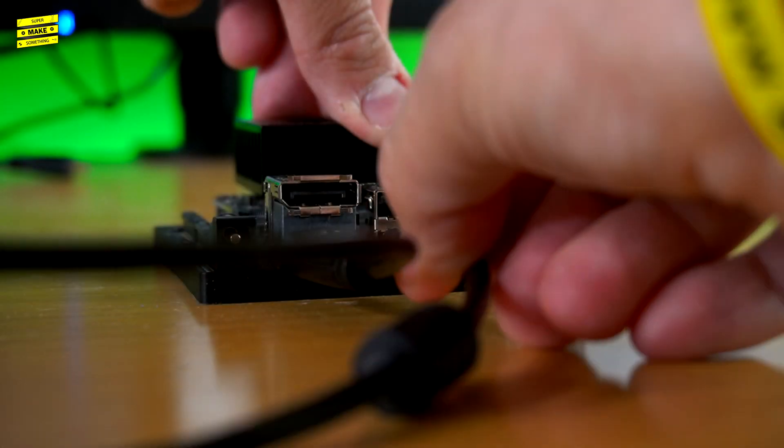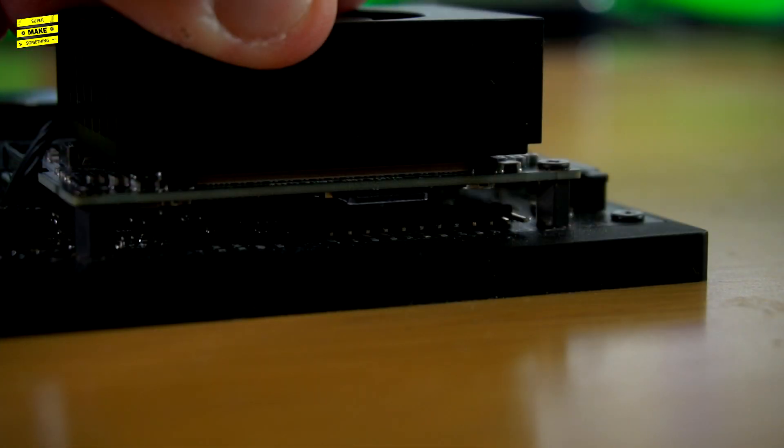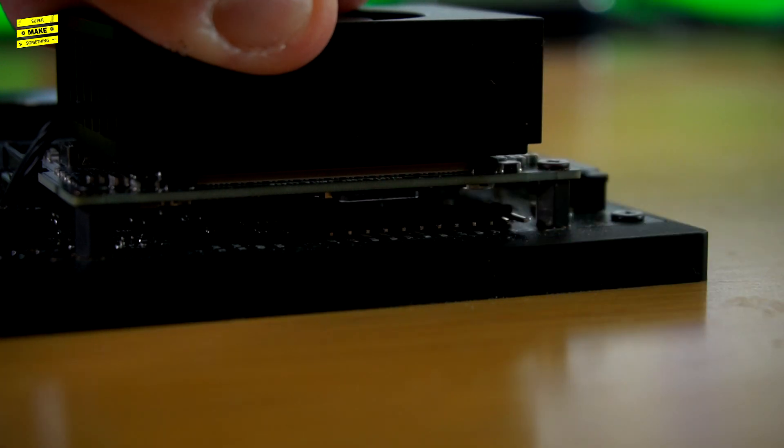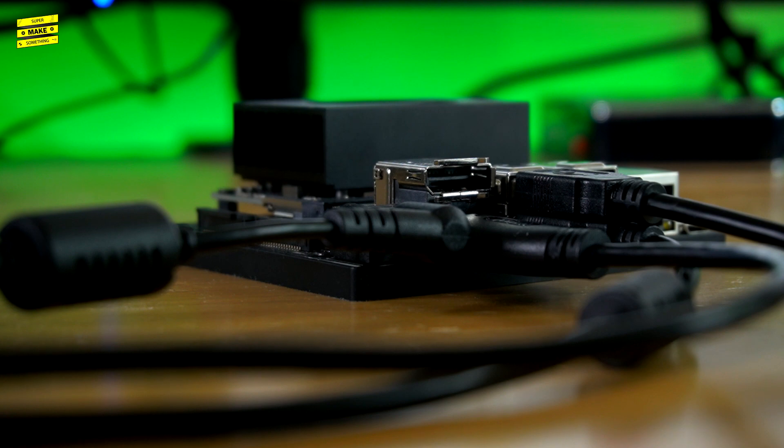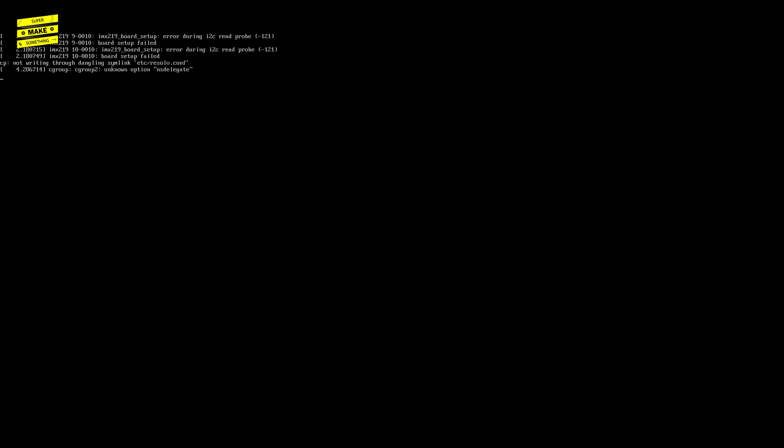After connecting a monitor, mouse, and keyboard to the carrier board, I inserted the microSD card containing the Jetpack image into the onboard microSD card slot. I next plugged in the power connector into the barrel jack, after which the Xavier NX booted.